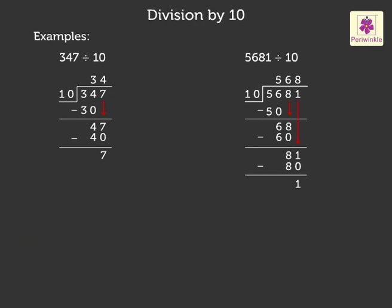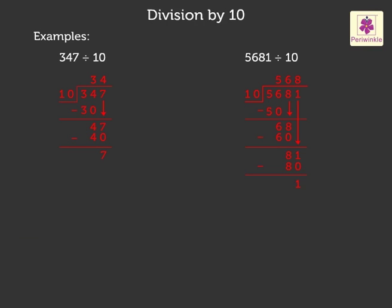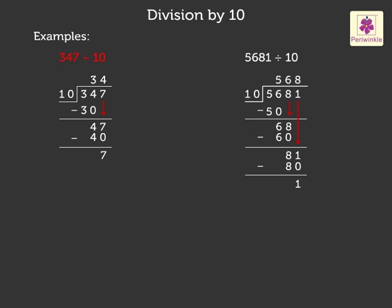Look at the board. We have solved two examples by division method. Look at the first example: three hundred forty-seven divided by ten. Here, we got the quotient as thirty-four and remainder as seven.